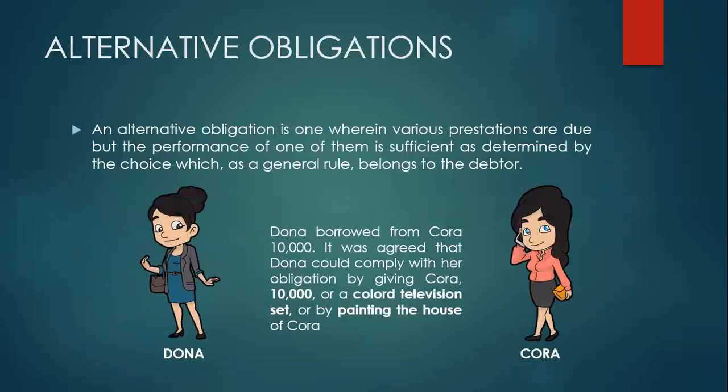So what are alternative obligations? Under the law, an alternative obligation is one wherein various prestations are due, but the performance of one of them is sufficient, as determined by the choice which, as a general rule, belongs to the debtor.